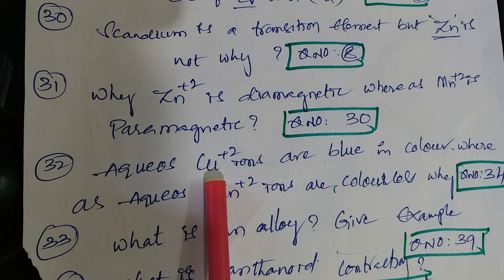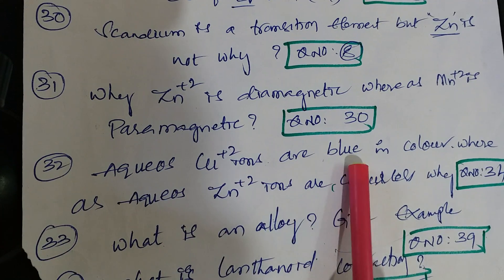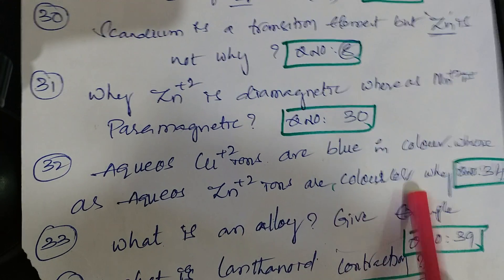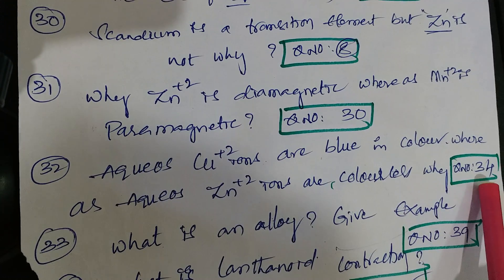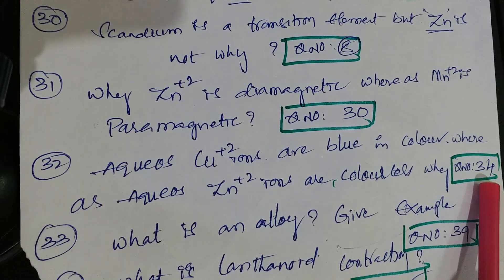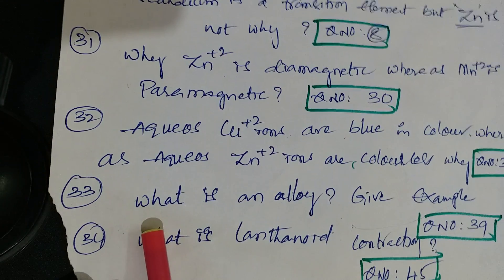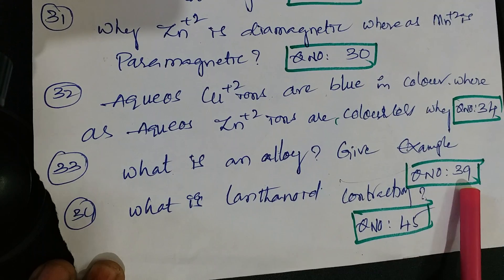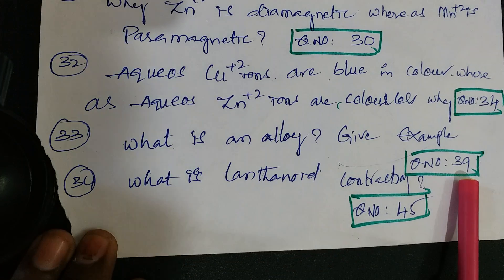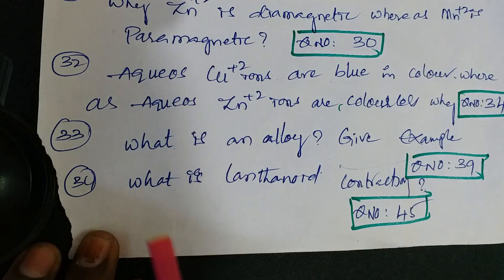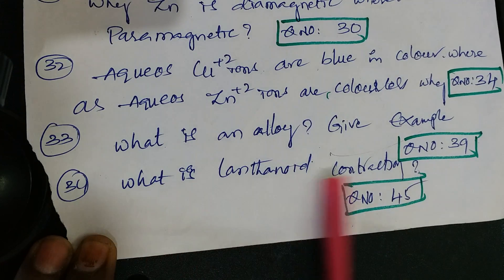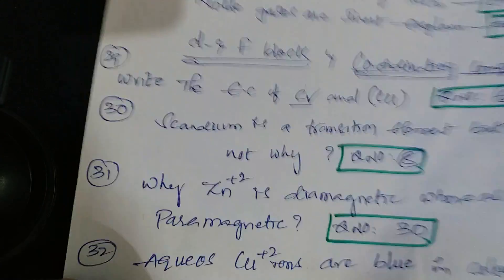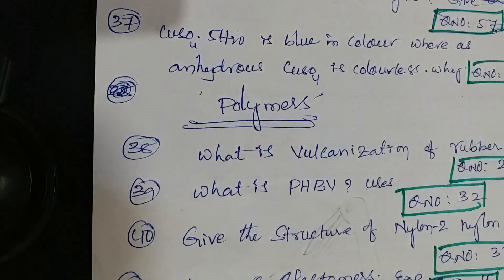Aqueous Cu²⁺ ions are blue in color whereas Zn²⁺ ions are colorless - why? That is question number 34 from material. What is an alloy - give an example - question number 39. What is lanthanide contraction - that is question number 45, also from material and Telugu academy.